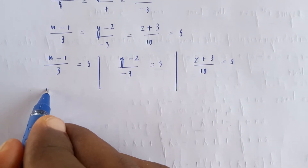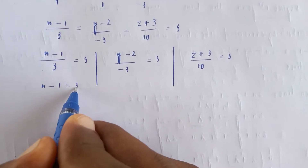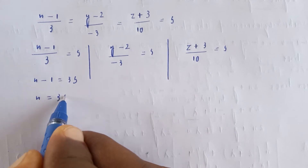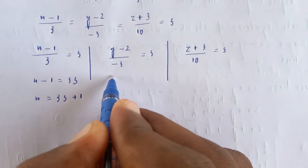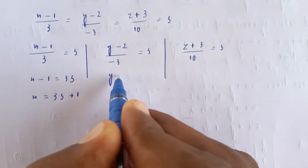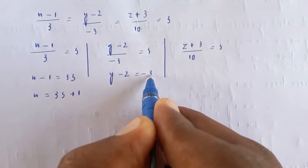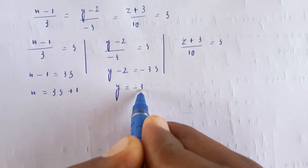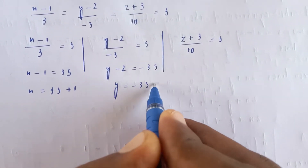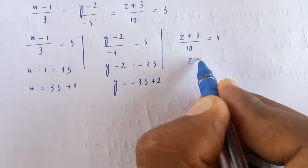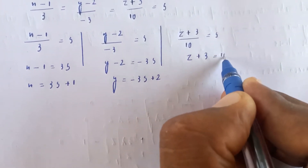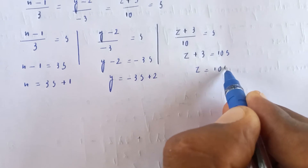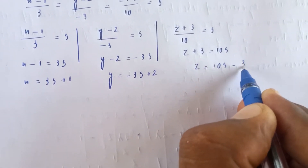So X minus 1 equals 3S, X equals 3S plus 1. Y minus 2 equals minus 3S, Y equals minus 3S plus 2. Z plus 3 equals 10S, Z equals 10S minus 3.